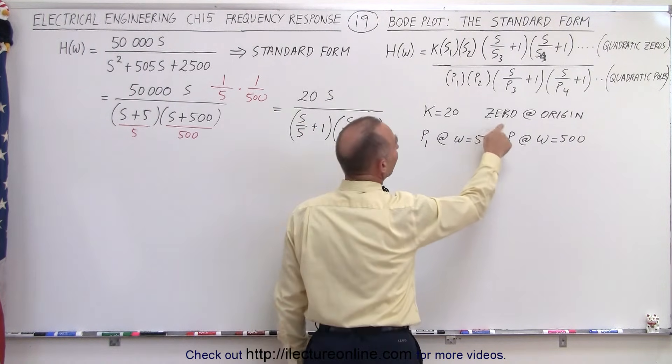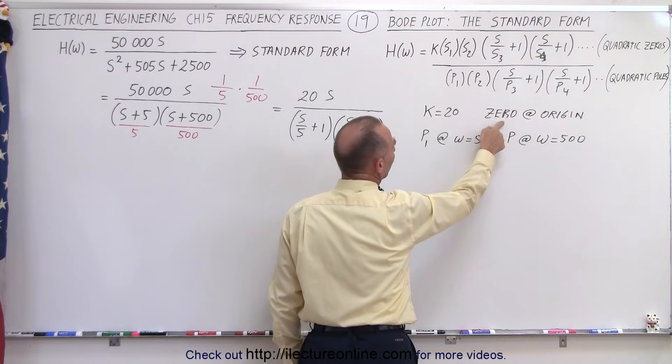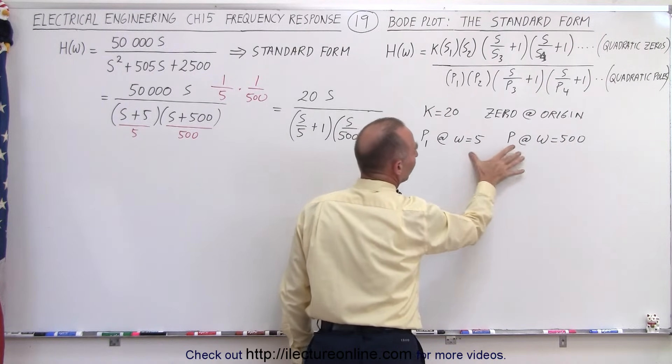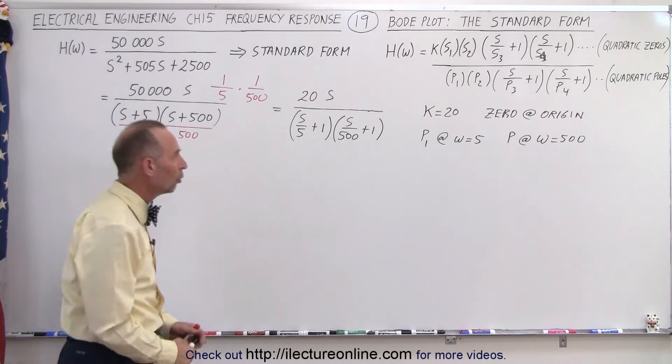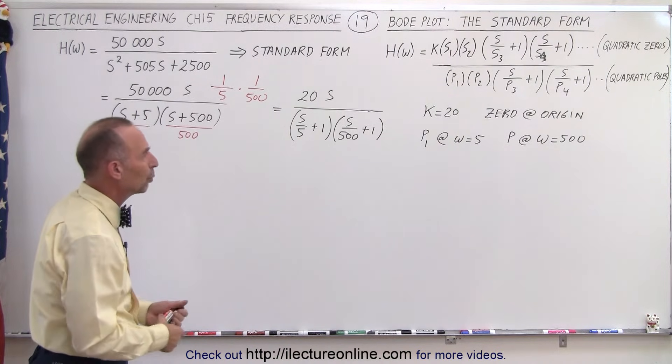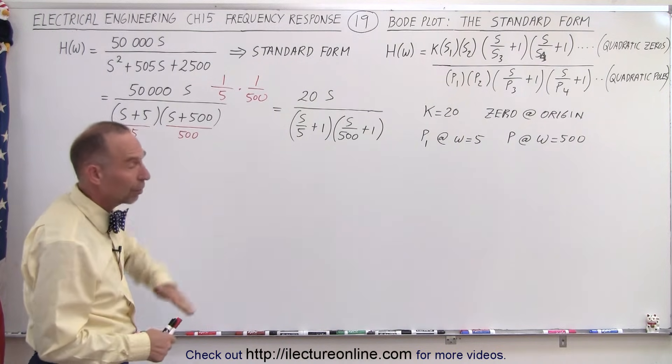Notice that the slope per decade for the zero would be plus 20, minus 20, minus 20 for the slope per decade for the poles. And of course that's what we then would apply if we then start drawing the Bode plot.